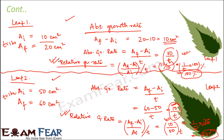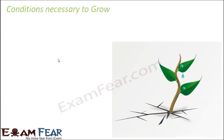Please understand this concept well — it is very important. That is how absolute growth rate and relative growth rate differ from each other. Now let us talk about the conditions required for a plant to grow — the inputs which must be given to a plant so that it can grow.